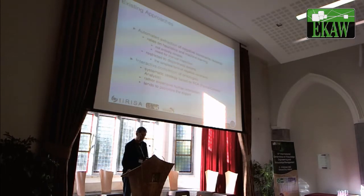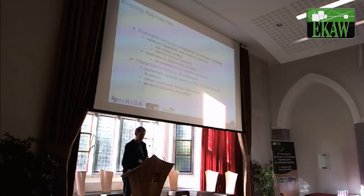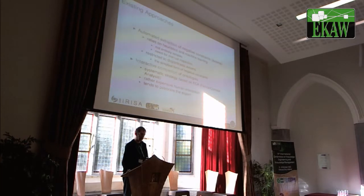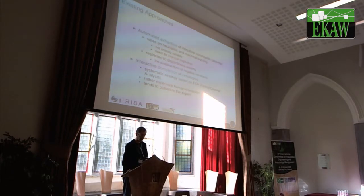In existing approaches, there is automated extraction of negative constraints. These rely on heuristics and machine learning, because they are automatic. This means the results are not entirely reliable, and therefore there is a need for manual inspection. In a number of works, this has been restricted to mostly disjointness axioms, which are the simplest form of negative constraints, but there are many other kinds of negative constraints.